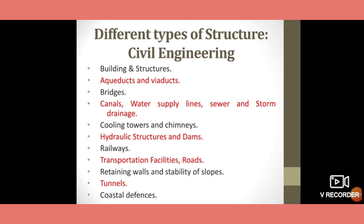The different types of civil engineering structures include: buildings, aqueducts, bridges, canals, water supply lines and networks, drainage and storm networks, cooling towers, chimneys, hydraulic structures, dams, railways, transportation facilities, roads, retaining walls, slopes and slope stability, tunnels, and coastal defenses. These are various structures — and many more are constructed — but all can be grouped under the mentioned outline.